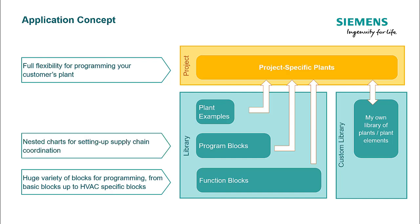What are program blocks? Program blocks can be defined as a nested chart which is a combination of multiple function blocks. A typical example of a program block is a supply chilled water coordinator, supply air coordinator, etc.